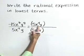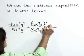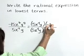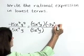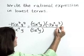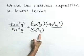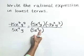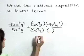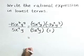In the numerator, 5x to the fourth y times negative 3x squared y to the third will give that numerator value. And in the denominator, 5x to the fourth y times 1 will give our previous denominator term.